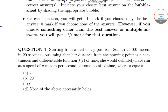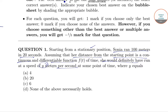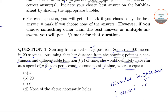The first question says: starting from a stationary point, Sonia ran 100 meters in 20 seconds. Assuming that distance from the starting point is a continuous and differentiable function, she would definitely have run at a speed of y meters per second at some point in time. So y equals to what? Sonia runs 100 meters in 20 seconds, so in one second she runs 100 by 20, which is 5 meters per second.